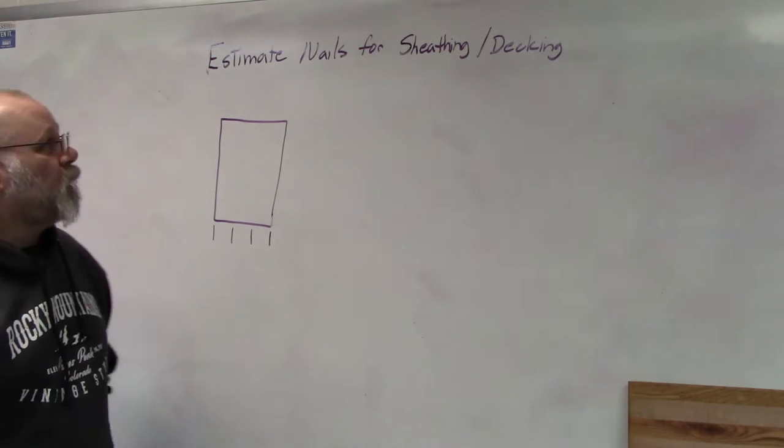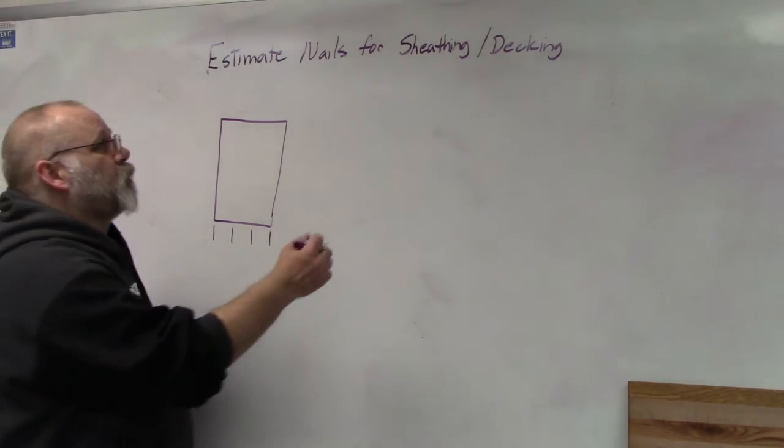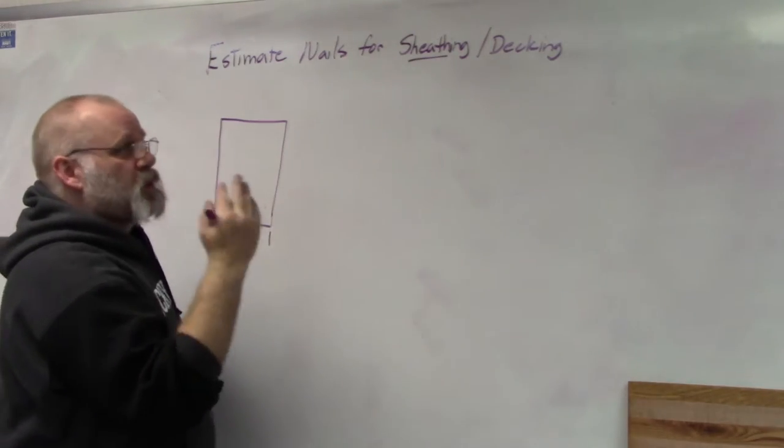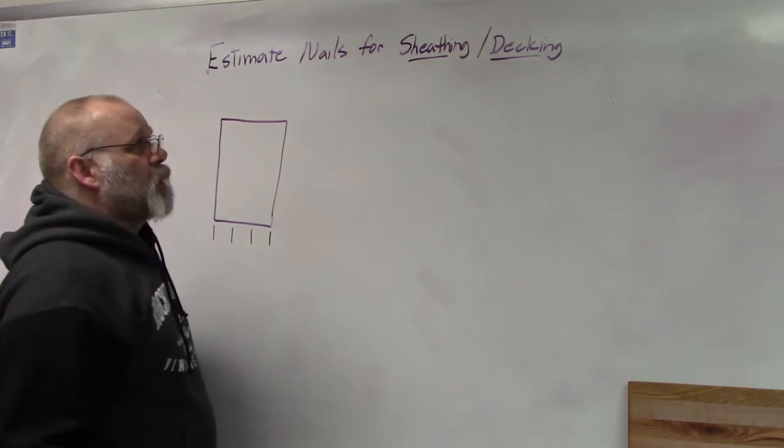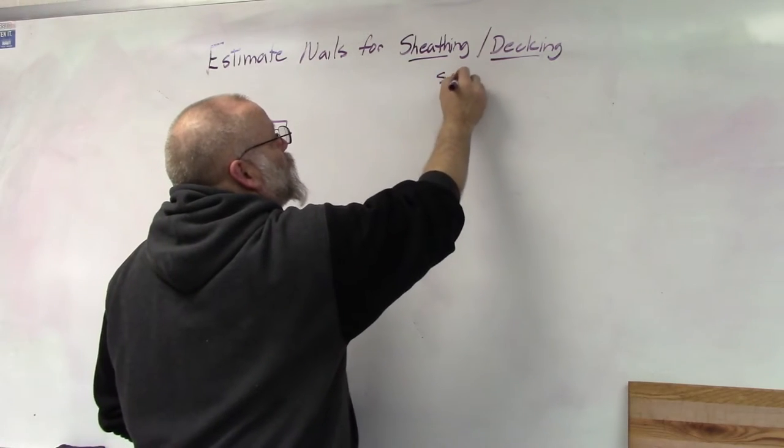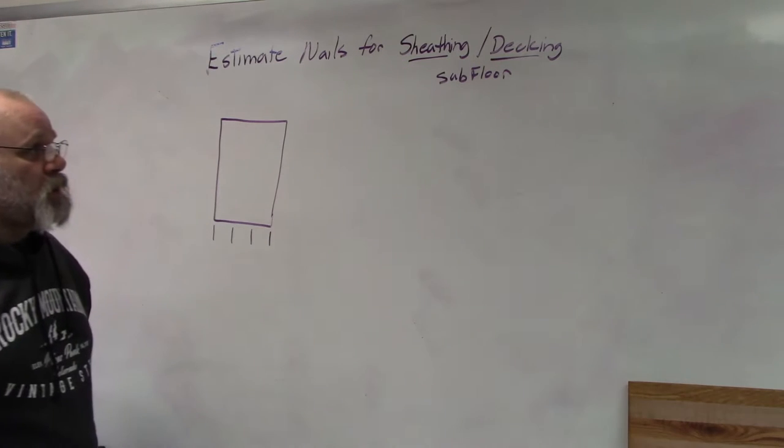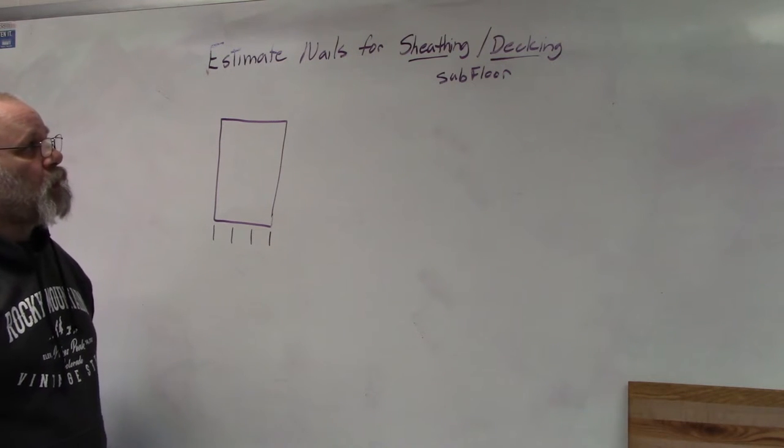In this video we're going to estimate nails for sheeting and decking. Sheeting is the plywood that goes on the outside of your house to enclose the entire house. Decking is the boards that go on the roof. You could even add subfloor because they use the same nailing patterns for each of them.